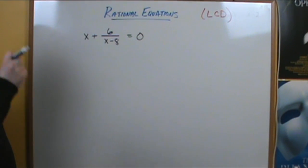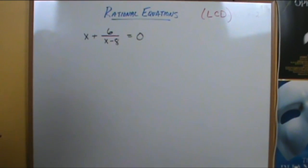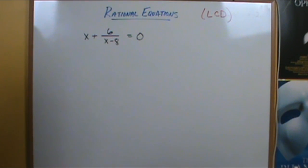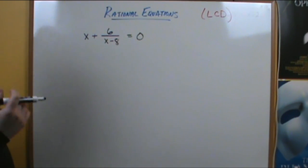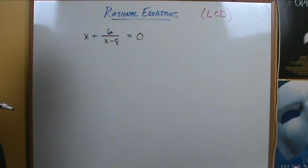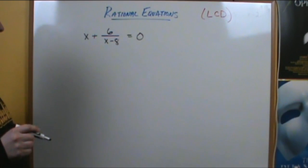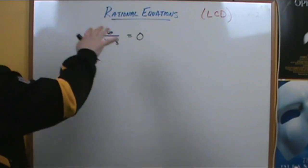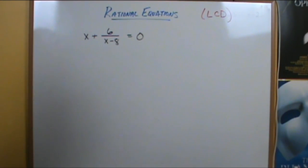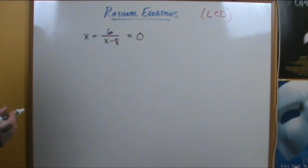In this video, we're going to talk about rational equations and how to solve them. In the previous two videos I posted about rational functions and equations, I dealt more with graphs. In this video, we're going to talk about how to solve these types of equations and get actual solutions. The big thing you need to know is the least common denominator, because we're going to multiply each term on both sides of the equation by the LCD to eliminate the denominators of our rational terms.